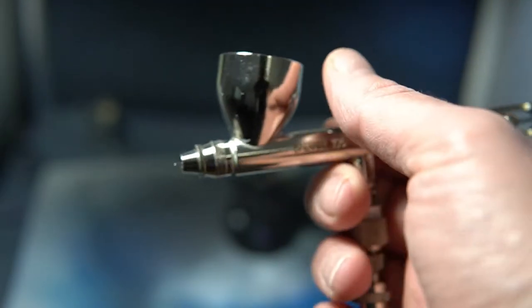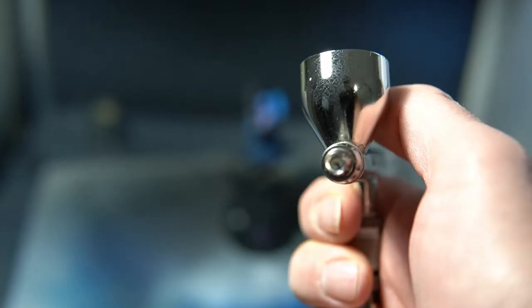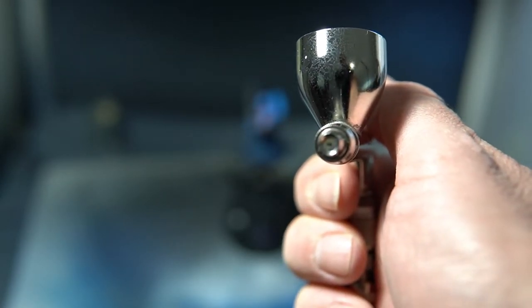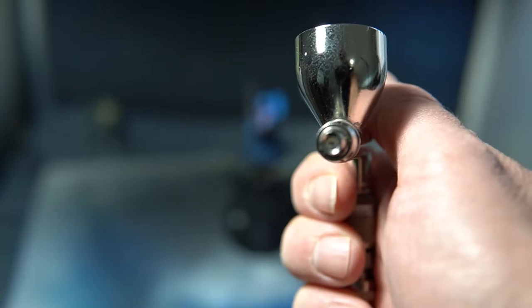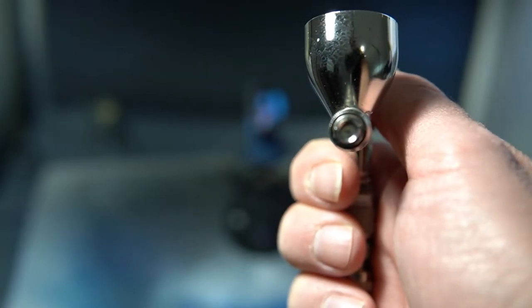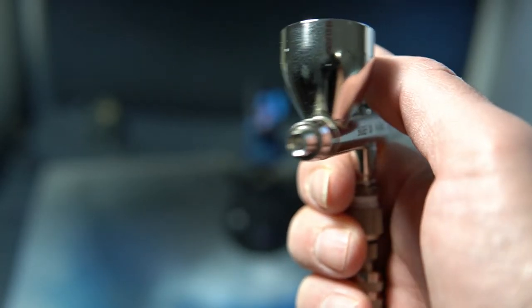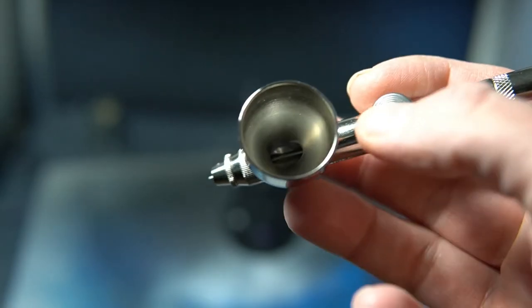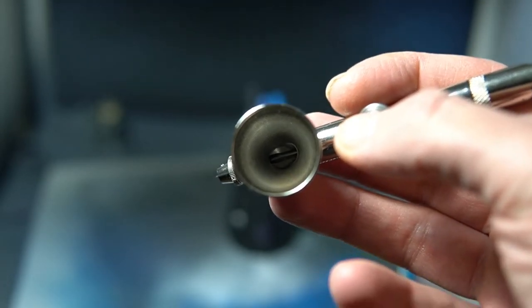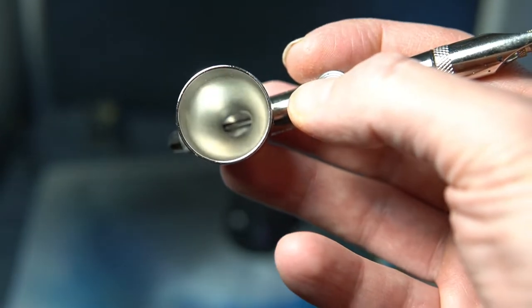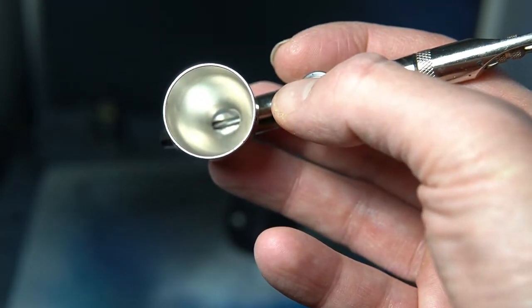Dual action internal mix gravity feed airbrush sounds fancy. It's not really anything too spectacular. It's nothing that you have to think too hard about. Dual action means when you press the trigger, you're pushing down for air and you're pulling back to release the paint into the airbrush. So that's the dual action, down and back.